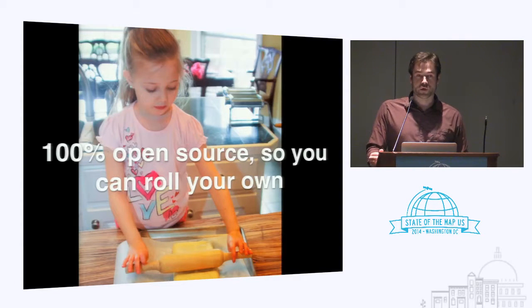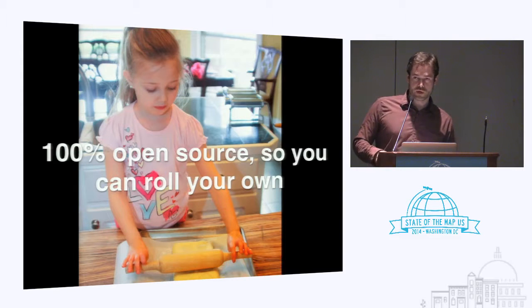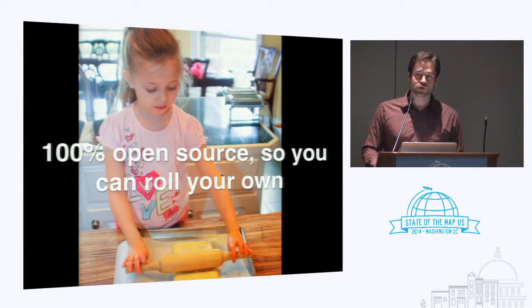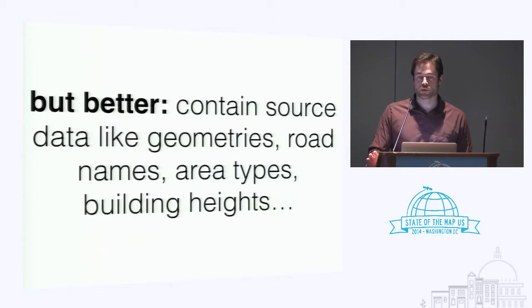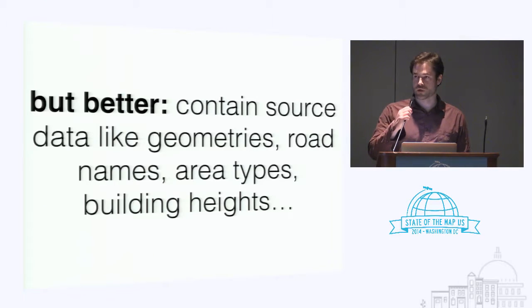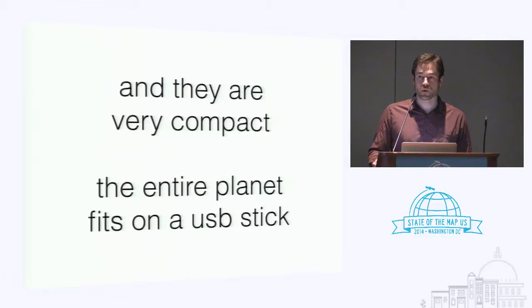The tools I'm going to be talking about today are 100% open source, just like the tools I've worked on for the past decade with image tiles. Vector tiles are not Mapbox-specific, other than the fact that we've moved our entire infrastructure over to them. You're encouraged to roll your own, just like many of you roll your own image tiles. Vector tiles are better — they contain source data like geometries, road names, area types, building heights, and all the metadata that makes OSM rich, but they are still very compact.